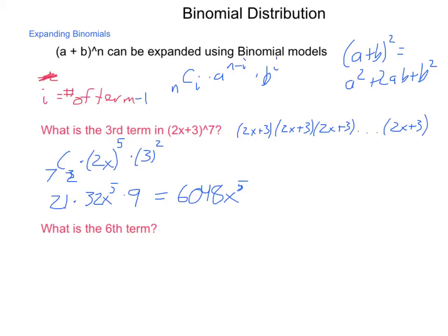What would the 6th term be? We're going to have 7 choose 5, times 2X to the N minus I, 7 minus 5 is 2, times our B term, 3 to the I power, which is 5. Now, 7 choose 5 is also 21, but now we're at 2 squared, which is just 4, so we have 4X squared. 3 to the 5th is 243. And multiplying that out, we will get 20,412 X squared. So the further along we get, the more influence that 3 has, and the less influence that 2 has in our end number.